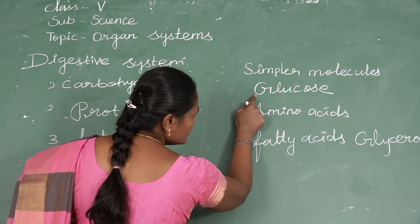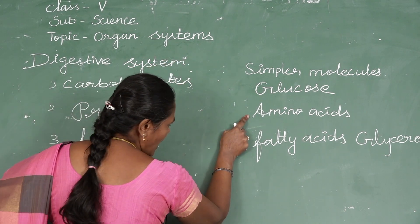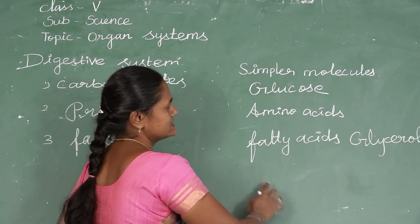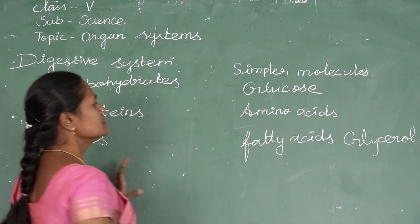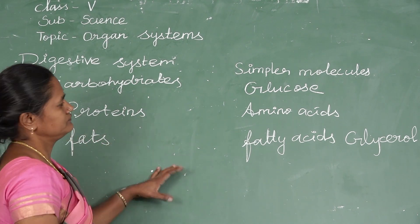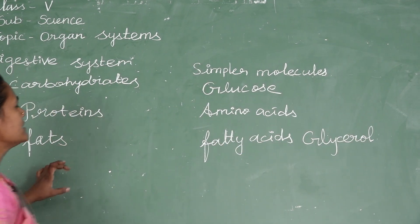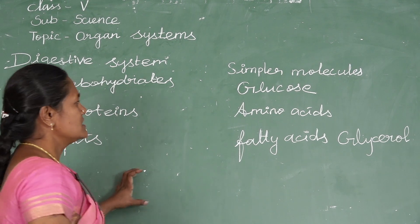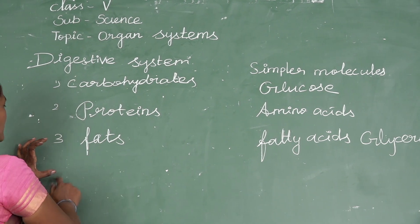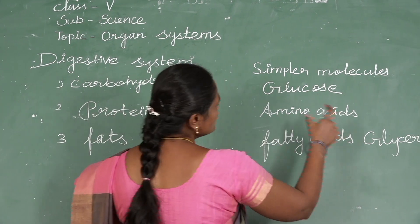Carbohydrates are converted into glucose, protein is converted into amino acids, and fat is converted into fatty acids. These simple molecules are assimilated by either blood or lymph.